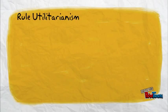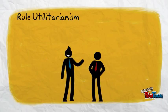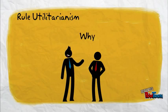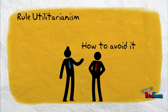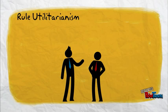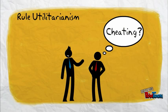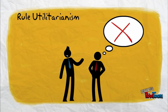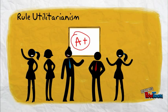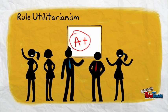On the other hand, rule utilitarianism will suggest that you approach your group member and explain to him why plagiarism is wrong and how to avoid it. This will prevent him from cheating in the future and allow the whole group to get a good grade on this assignment.